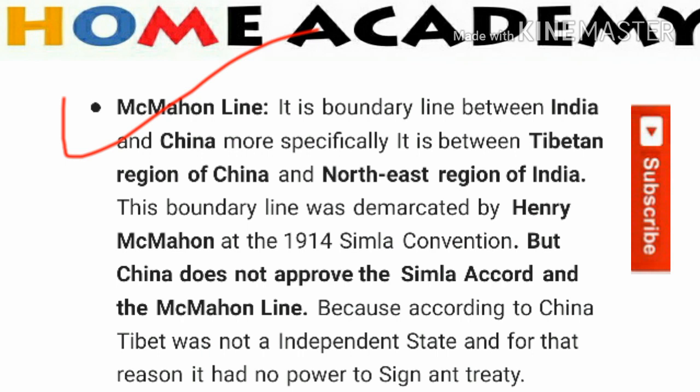The second line is the MacMahon Line. It is the boundary line between India and China — more specifically between the Tibetan region of China and the North East region of India. This boundary line was demarcated by Henry MacMahon at the 1914 Simla Convention. However, China does not approve the Simla Accord and the MacMahon Line, because according to China, Tibet was not an independent state and therefore had no power to sign any treaty.